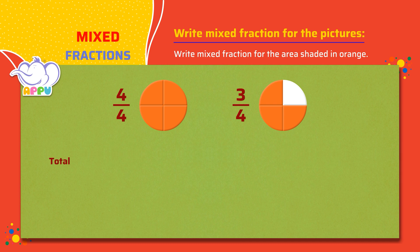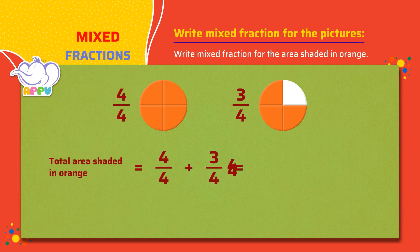To find the total area shaded in orange, we add both the shaded areas: 4/4 plus 3/4. 4/4 can be written as 1. This becomes 1 plus 3/4, which equals 1 3/4.